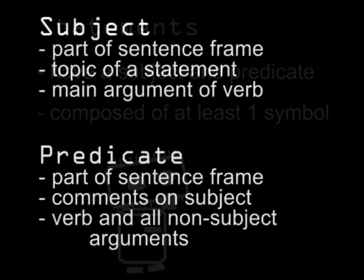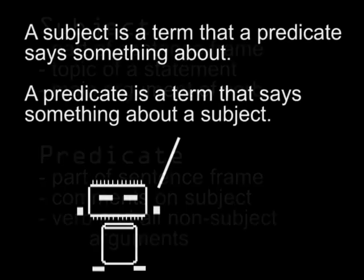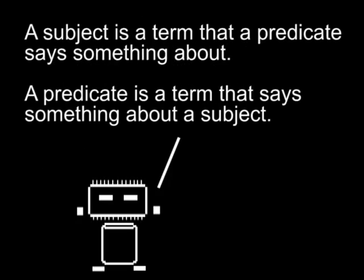But subjects are part of a larger frame. The frame includes the predicate, which relates information about the subject or subjects. If you went through my intro to the verb and its arguments, especially the first two videos on arguments and valency, you've got a linguistic perspective on subjects and predicates. You saw that verbs take arguments and the verb and its arguments form the core of a sentence frame. But you don't need to be a linguist — the rough idea is that a subject is a term that a predicate says something about, and a predicate is a term that says something about a subject.